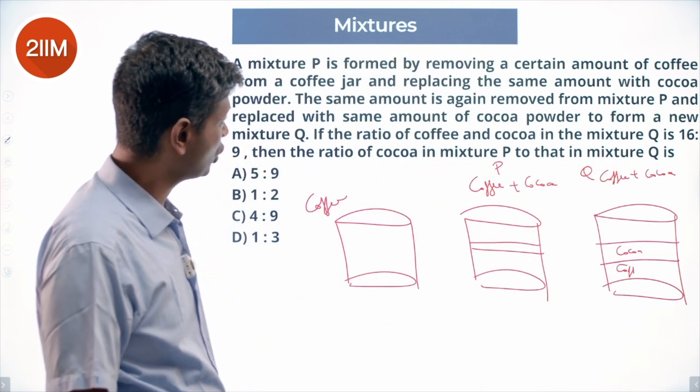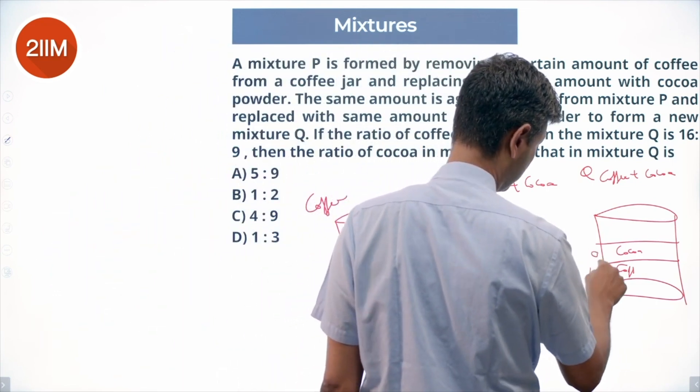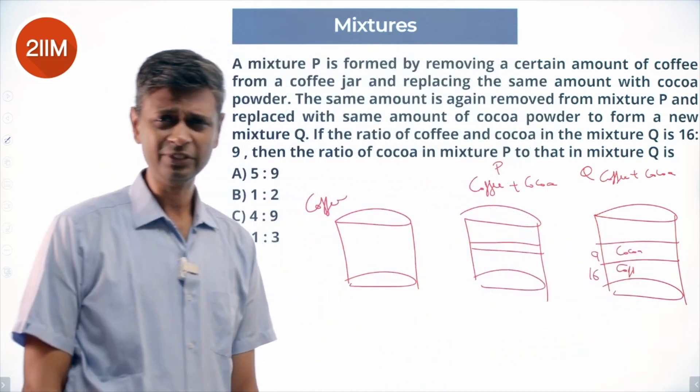The ratio of coffee and cocoa in the mixture Q is 16 to 9. This is 16, this is 9. Very nice question.